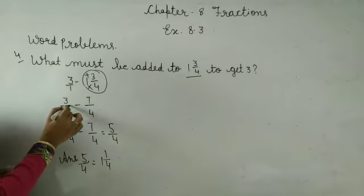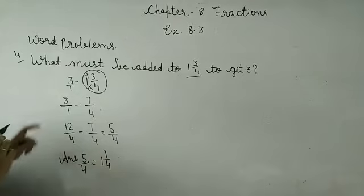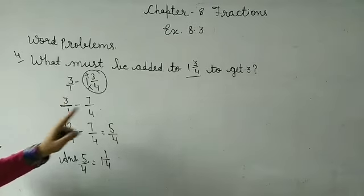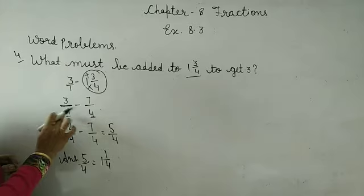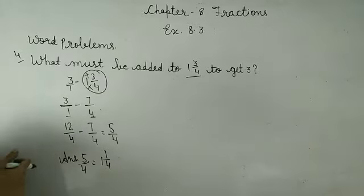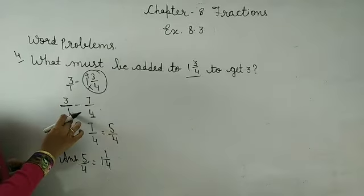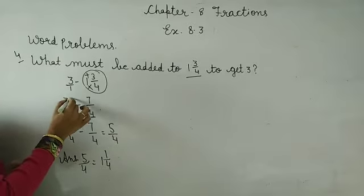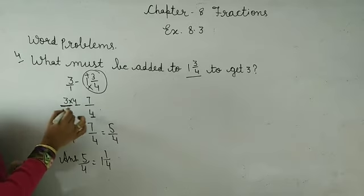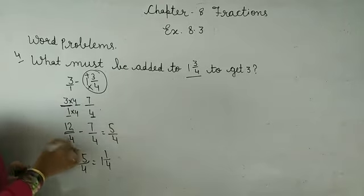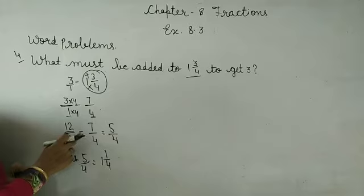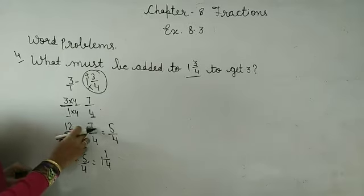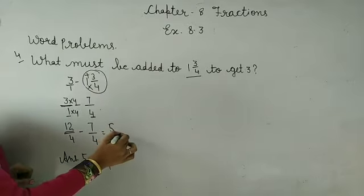Now we need to write 3 and subtract it. First we need to make the denominators the same. 1 and 4, LCM is 4. So 3 times 4 equals 12, 1 times 4 equals 4. 12 upon 4. Subtract 7 upon 4. 12 minus 7, we get 5 upon 4.